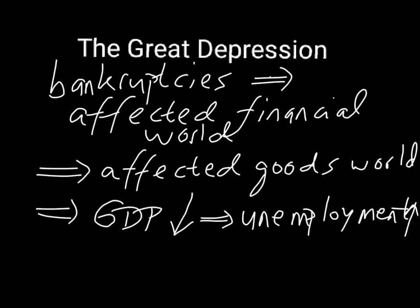These bankruptcies, of course, affected the entire financial world. And because so many people lost their savings as well, they were not able to buy as many goods and services, cars, and houses. The goods world — or what some people call Main Street — was affected as well, which reduced GDP significantly. That led to the high unemployment rates during the 1930s; unemployment was as high as 25% during its worst time.